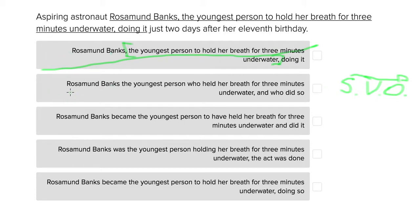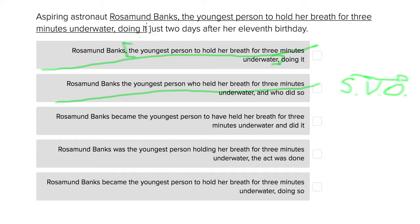The second option: 'Rosamund Banks, the youngest person who held her breath for three minutes underwater and who did so just two days after her 11th birthday.' This doesn't work because the subject is the entire phrase 'Rosamund Banks, the youngest person who held her breath for three minutes underwater,' but again we're not told what she did. 'Who did so just two days after her 11th birthday' doesn't tell us what the action actually was. A better phrasing would be 'did it just two days after her 11th birthday,' even though that would still leave room for misunderstanding.